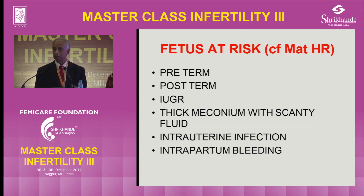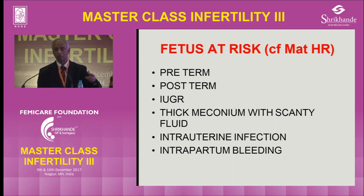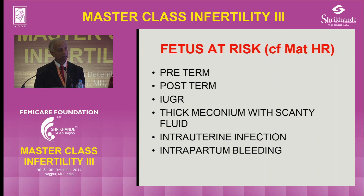IUGR — intrauterine growth restriction — is an issue. A smaller baby, such as 1.8 kg at 34 weeks versus 2.4 kg at 37 weeks, will have a smaller placenta with more pale and infarcted cotyledons. When decelerations start, the smaller baby runs into hypoxia and acidosis faster. Post-term babies experience differential placental perfusion and get hypoxic more quickly if decelerations start. Preterm babies develop hyaline membrane disease very quickly, so you don't waste time with preterm babies.